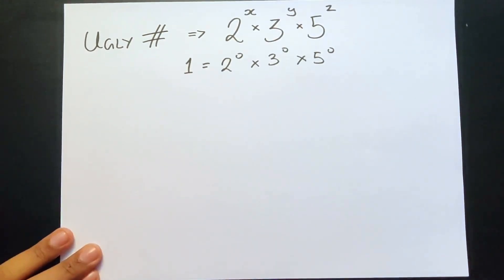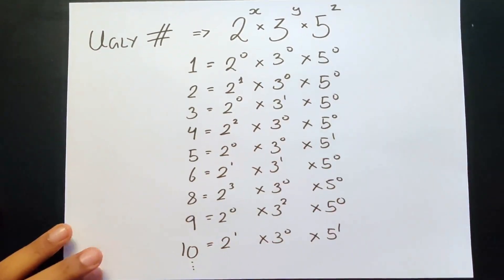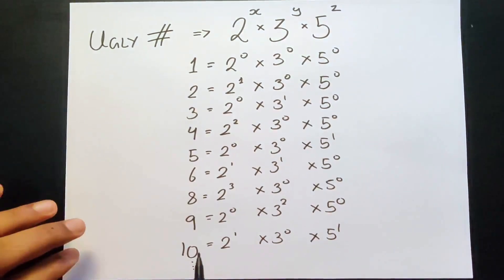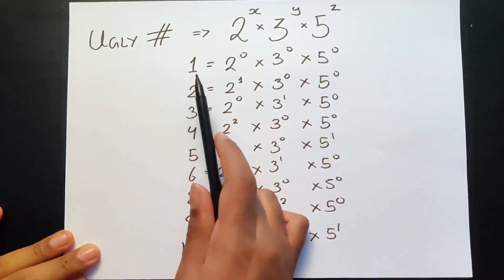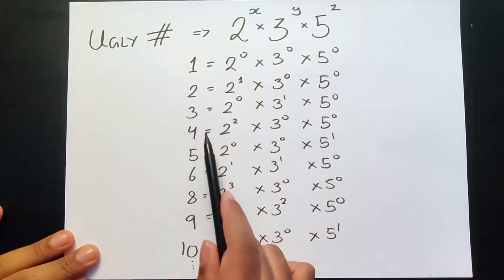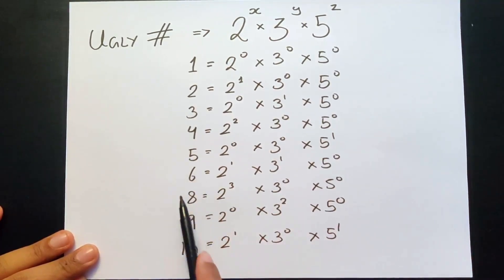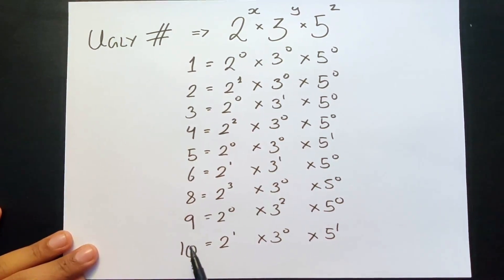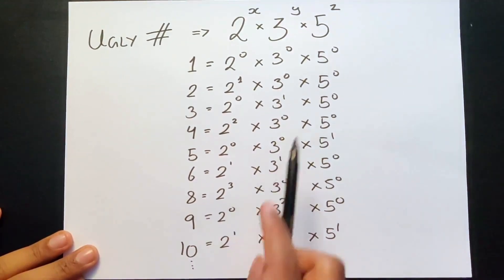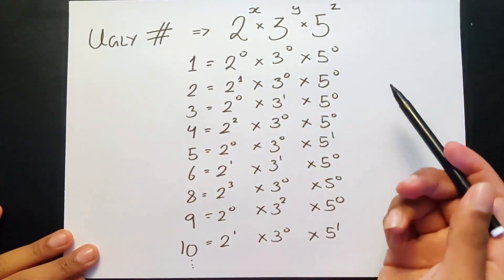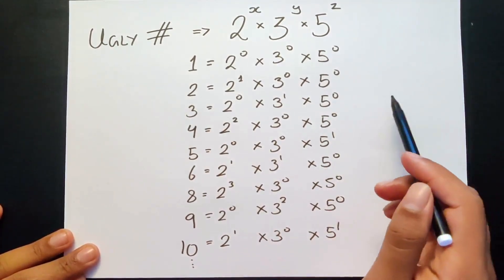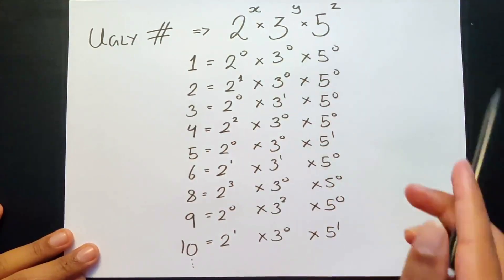Let's look at what the other ugly numbers are. These are the first few: 1, 2, 3, 4, 5, 6. Notice how there's no 7 — then 8, 9, 10, and it keeps going on. Here's the breakdown of how each one looks when you factorize it with 2, 3, and 5.